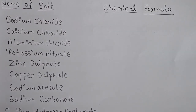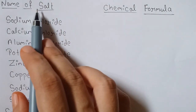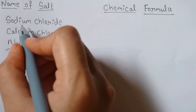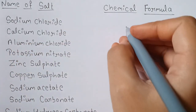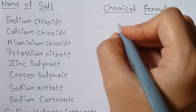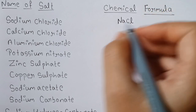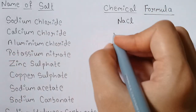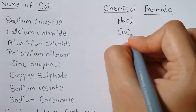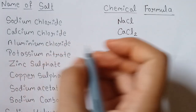Hello everyone, welcome back to my YouTube channel. We are going to discuss salt names and their chemical formulas. First is sodium chloride — chemical formula NaCl. Then calcium chloride, CaCl2. Then aluminum chloride,